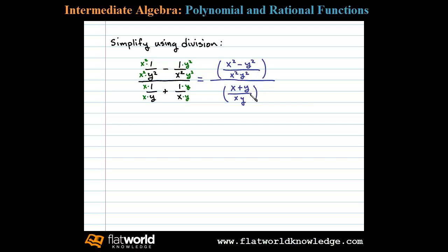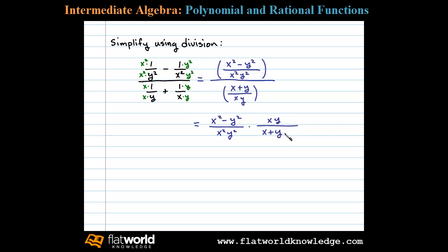At this point we have a single algebraic fraction divided by another single algebraic fraction. To simplify further, we multiply by the reciprocal of the denominator — so we take x squared minus y squared over x squared y squared and multiply that times x y over x plus y.